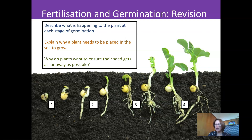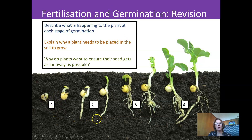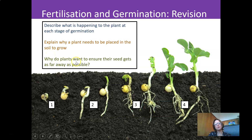Just a bit of recap and revision so you understand the whole process of fertilization and the structure of the seed and why it's important. Now look at this diagram — describe what is happening to the plant at each stage of germination: stage 1, stage 2, stage 3, and stage 4. I also want you to explain why a plant needs to be placed in the soil to grow, and why plants want to ensure their seeds get as far away as possible — which is why we're going to go into seed dispersal soon.